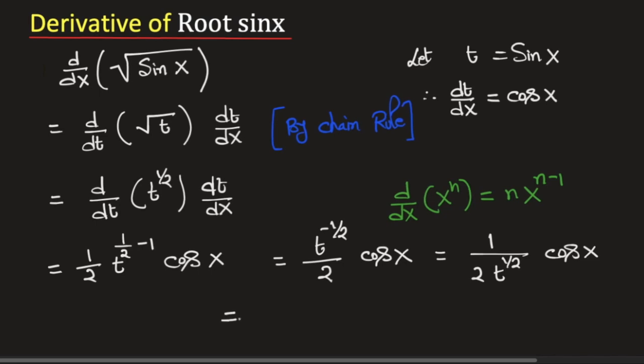We know that t to the power half can be written as square root of t. So we have 1 over 2 times root of t cosine x and t is sine x. So putting the value of t here this will be equal to cosine x over 2 times square root of sine x.